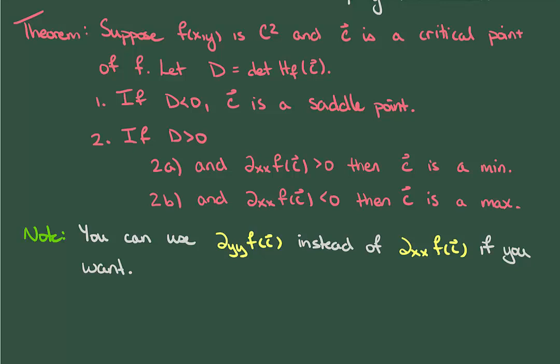Now the reason this theorem works is that the determinant is the product of the eigenvalues. If the determinant is negative, this means that the sign of the eigenvalues are different, leading to a saddle point. If the determinant is positive, then the eigenvalues have the same sign, either both positive or both negative. And by checking one of the elements of the main diagonal, we can determine which scenario is true and apply the second derivative test.